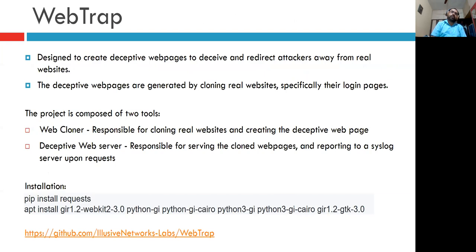The first tool we discuss is WebTrap, designed to create deceptive web pages to deceive and redirect attackers away from real websites. The deceptive web pages are generated by cloning real websites, specifically their login pages. WebTrap consists of two components: the web cloner, which clones real websites to create deceptive web pages, and the deceptive web server, which serves the cloned pages and reports to the syslog when someone tries to access them.